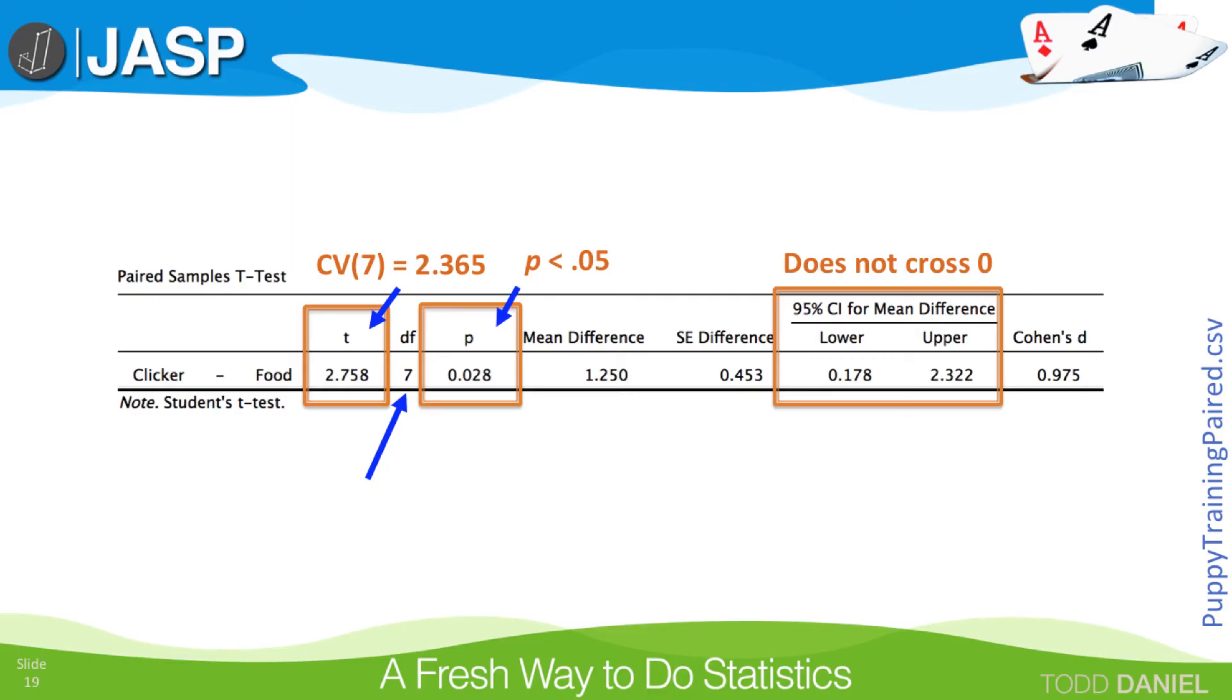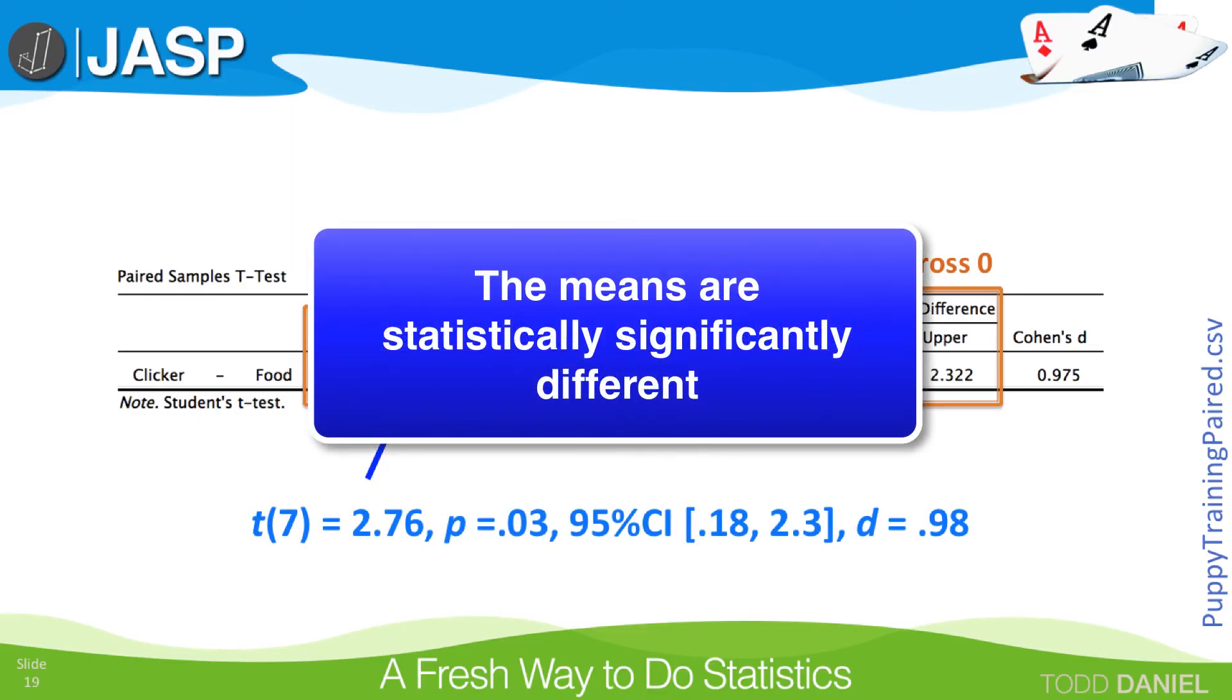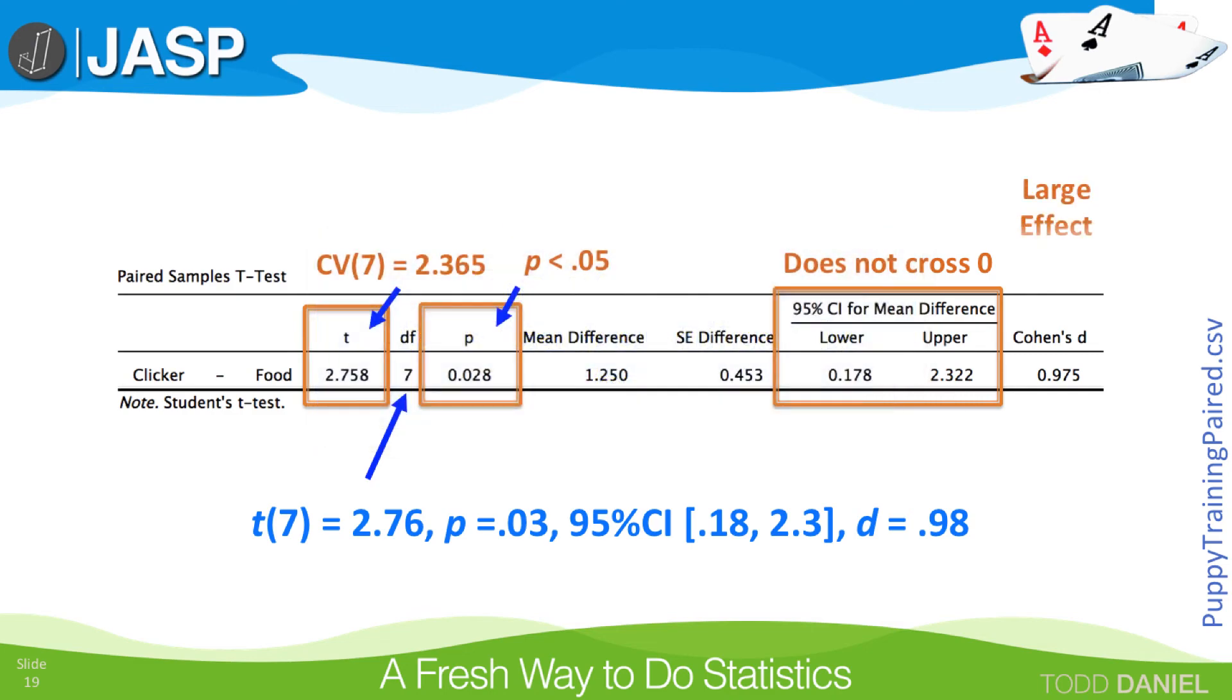All three of these findings tell us the same thing. There is a statistically significant difference between these two means. In addition, we see Cohen's D is a 0.98, which is a very large effect.